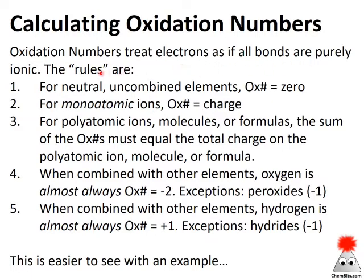Here are the rules — I'm just going to go through them quickly and then we'll touch on each one. For neutral and uncombined elements, the oxidation number is zero. For monoatomic ions, the oxidation number is equal to the charge. In those two cases, oxidation number and charge really are behaving like the same thing.